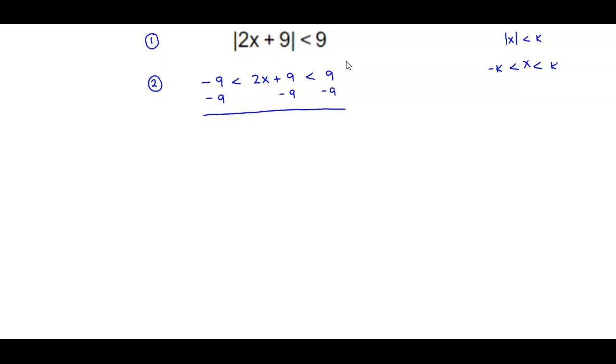So therefore, we have negative 9 minus 9, which is negative 18, which is less than 2x, because that gives us 0, which is less than 9 minus 9, which is 0.